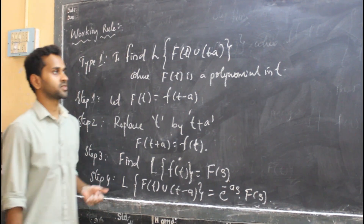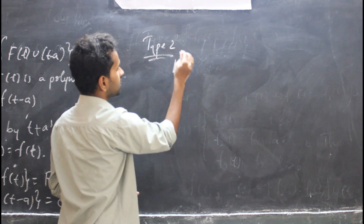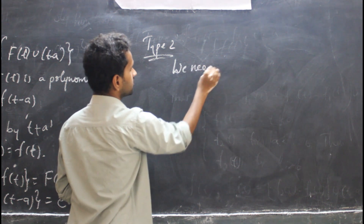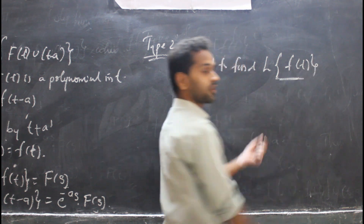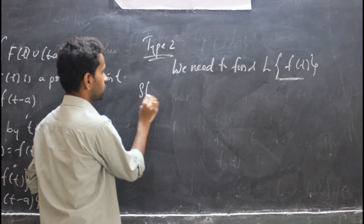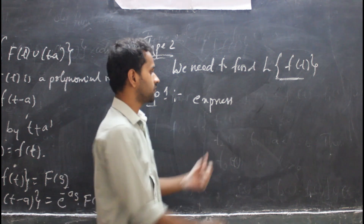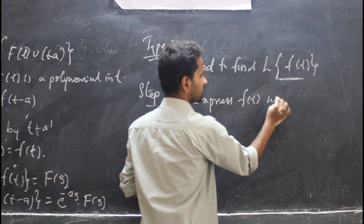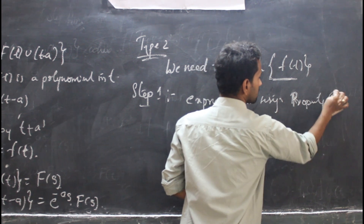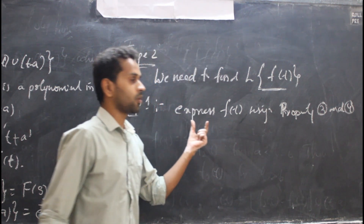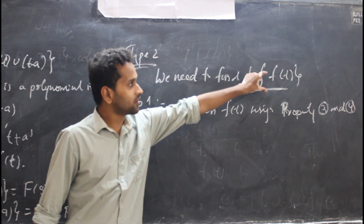For Type 2 problems, we need to find the Laplace transform of a given discontinuous function f(t). Step 1: express the discontinuous function f(t) using property number 3 and 4, which we discussed earlier.